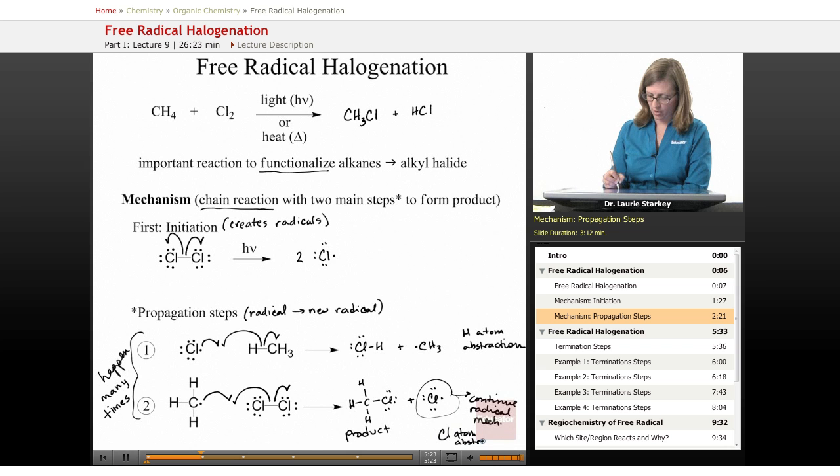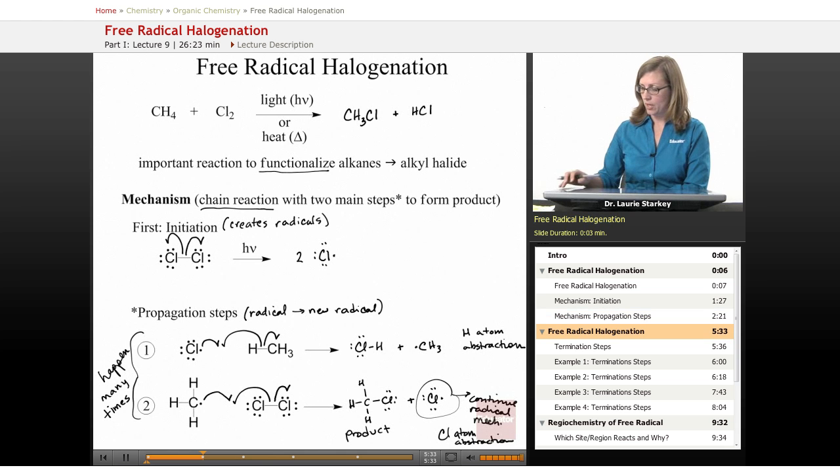So after our initiation step, all the steps of our free radical halogenation are propagation steps that are atom abstractions. Now what else can happen in a radical reaction?